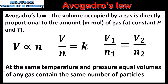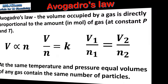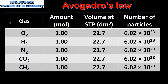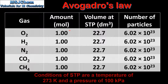So this tells us that for any gas, equal volumes at the same temperature and pressure will contain the same number of particles. In this table we have the gases oxygen, hydrogen, nitrogen, carbon dioxide, and methane. As we can see, one mole of each gas has a volume of 22.7 cubic decimetres under conditions of STP.